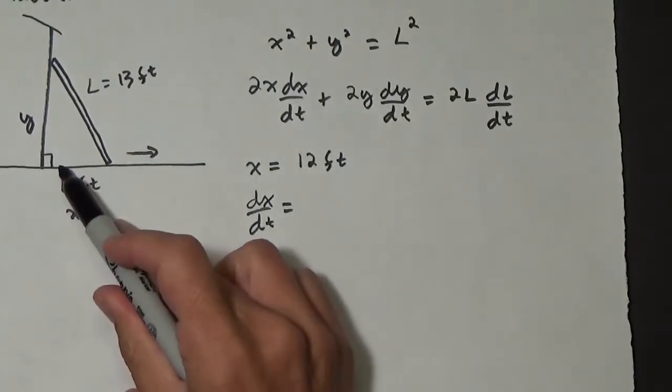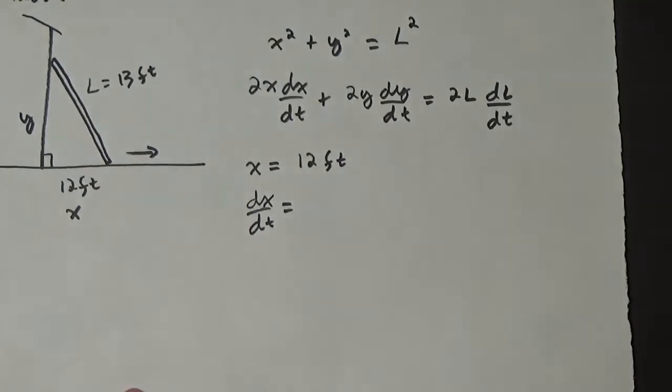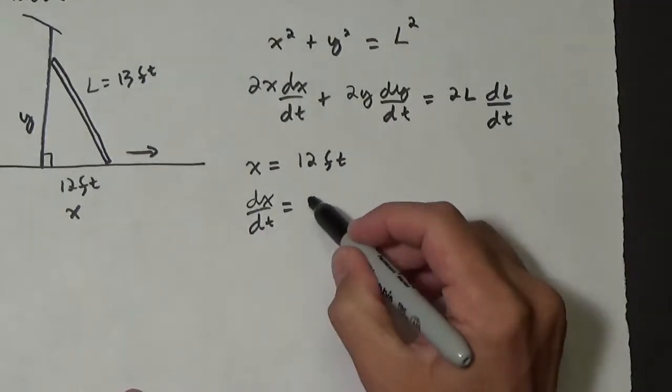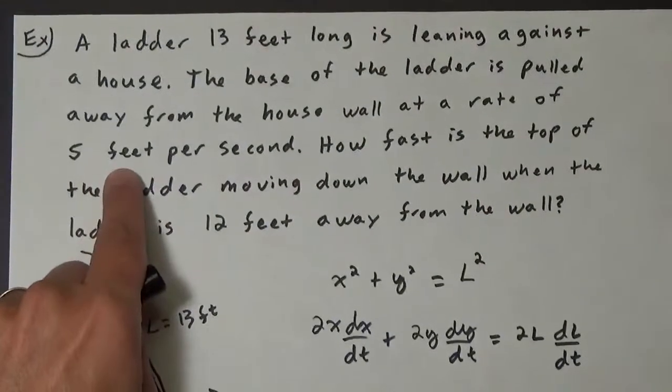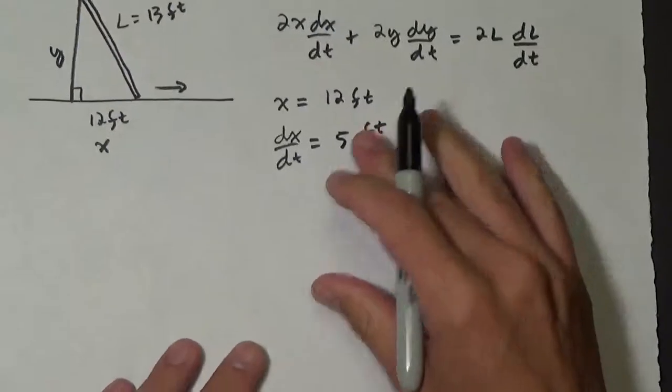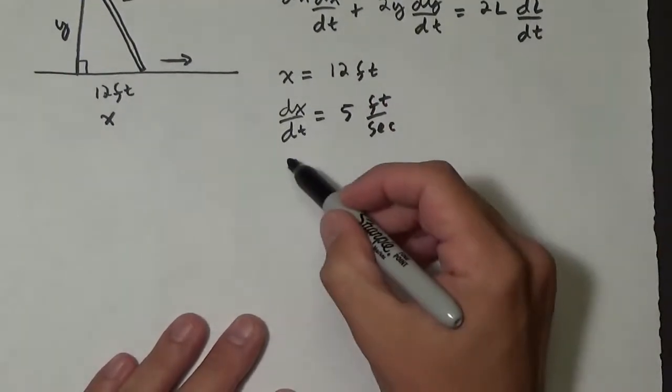We know dx/dt. Well, dx/dt is the rate that the ladder is being pulled out. So the ladder is being pulled out at 5 feet per second. So let's set that up here. We have y. What is y?